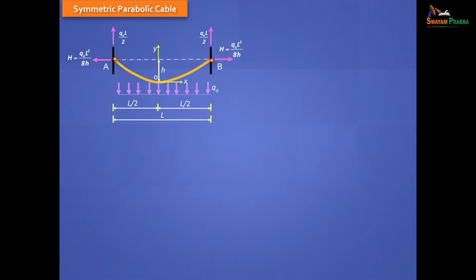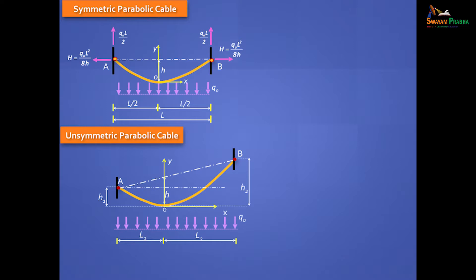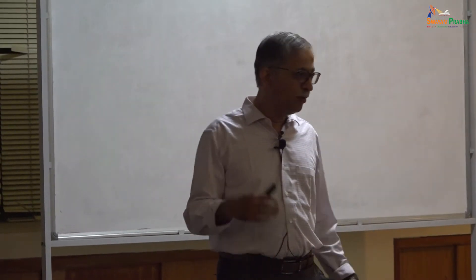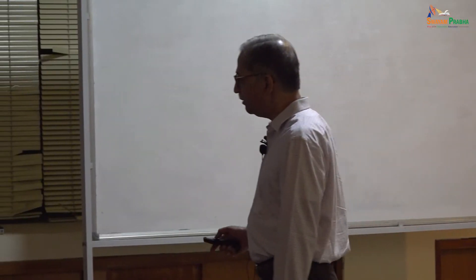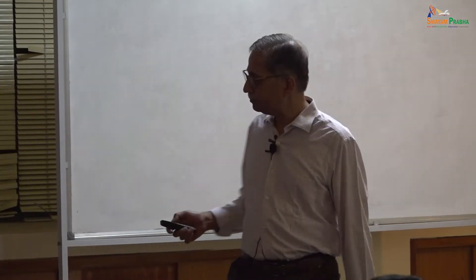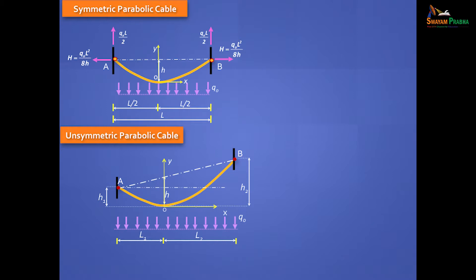Now let's consider an unsymmetric cable, where the two supports are at two different levels. Let's say the lowest point is O. Define the sag H as the difference in elevation between the lowest point and the straight line joining the two supports — the chord. If the left support is at height H1 and the right at H2 from O, and the left distance is L1 and the right distance is L2, can we develop some relationships?